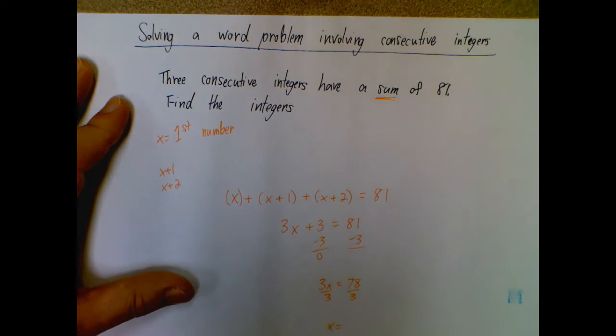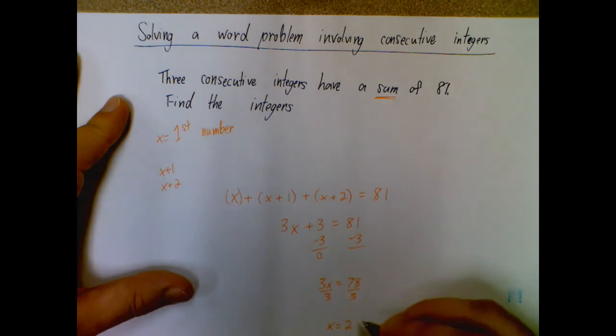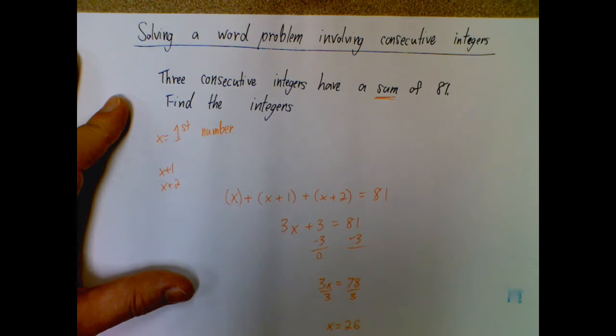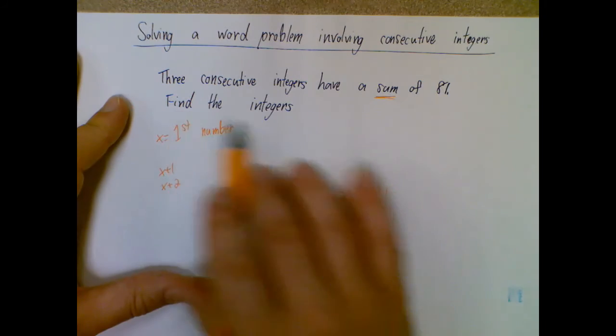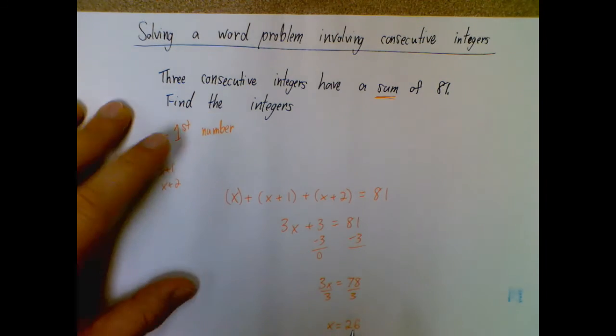So this is 16 and 18, so 26. Now this is not quite the end of your answer. That is the end of your equation, but I want to find all the integers. So jumping back, x is my first number.